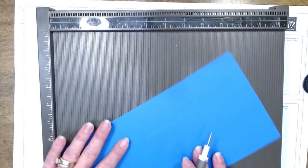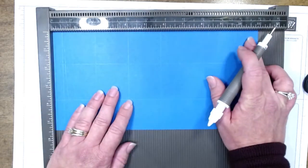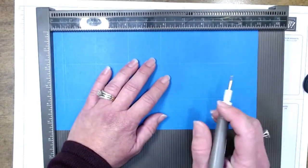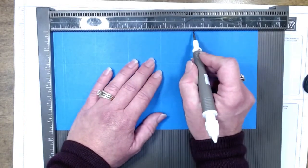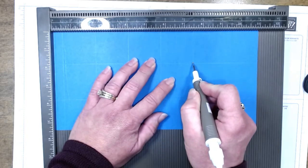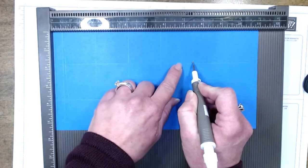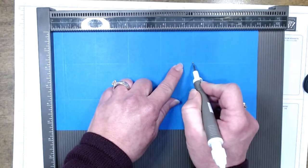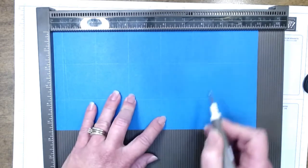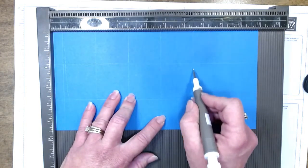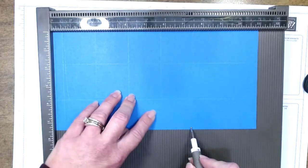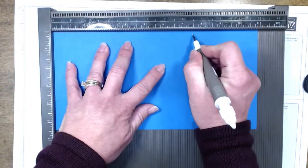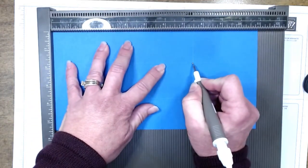Before we put the scoreboard away, I now want to rotate it. So the 11-inch side is up at the top. Now I want to come up to the seven and a half inch mark. And I only want to score down to that one and three-fourths score mark. I'm just literally following it to that point. I want to do the same thing on this side.